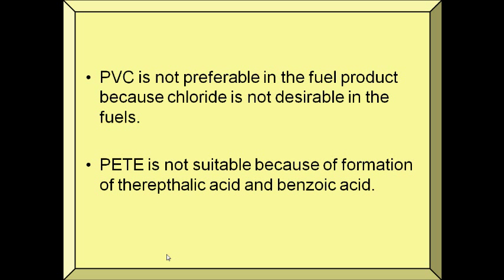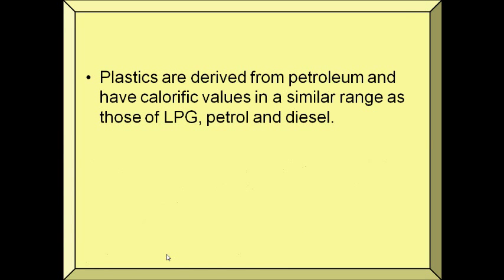PVC is not preferable in the fuel product because chloride is not desirable in fuels. PVC has different thermal cracking processes and different products from those of common waste. If the feedstock contains PVC, the plants must have a treatment system and a solvent scrubber to remove HCl from the pyrolysis product. Polyethylene terephthalate is also not suitable because of formation of terephthalic acid and benzoic acid. Plastics are derived from petroleum and have calorific values in a similar range as those of LPG, petrol, and diesel.